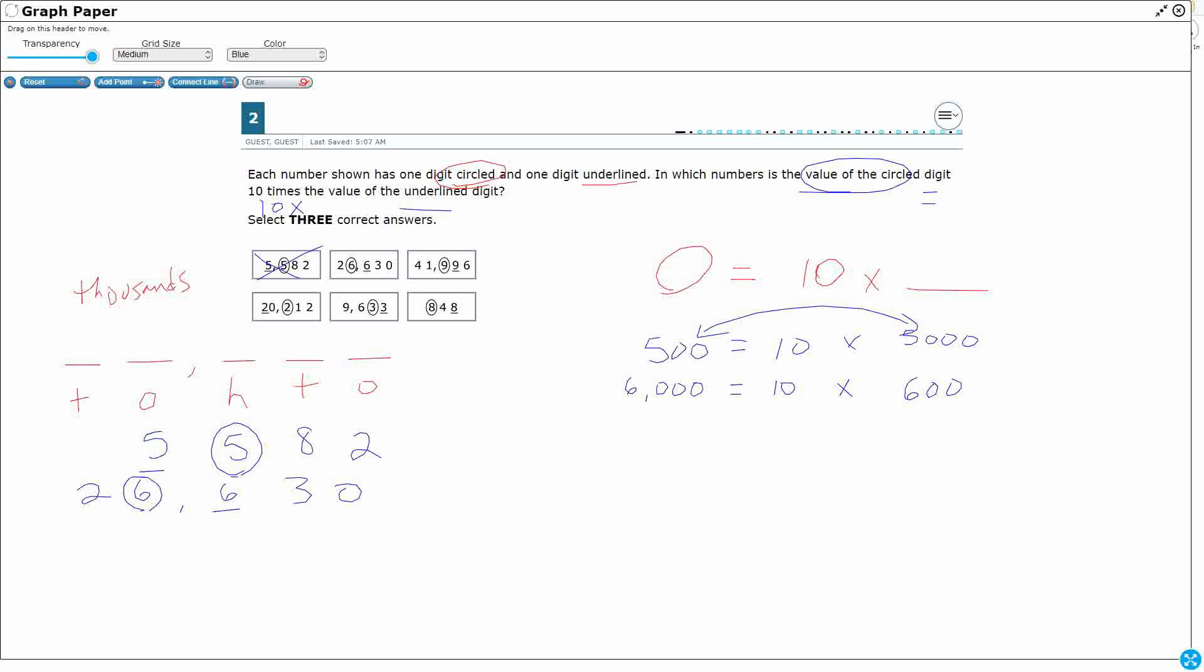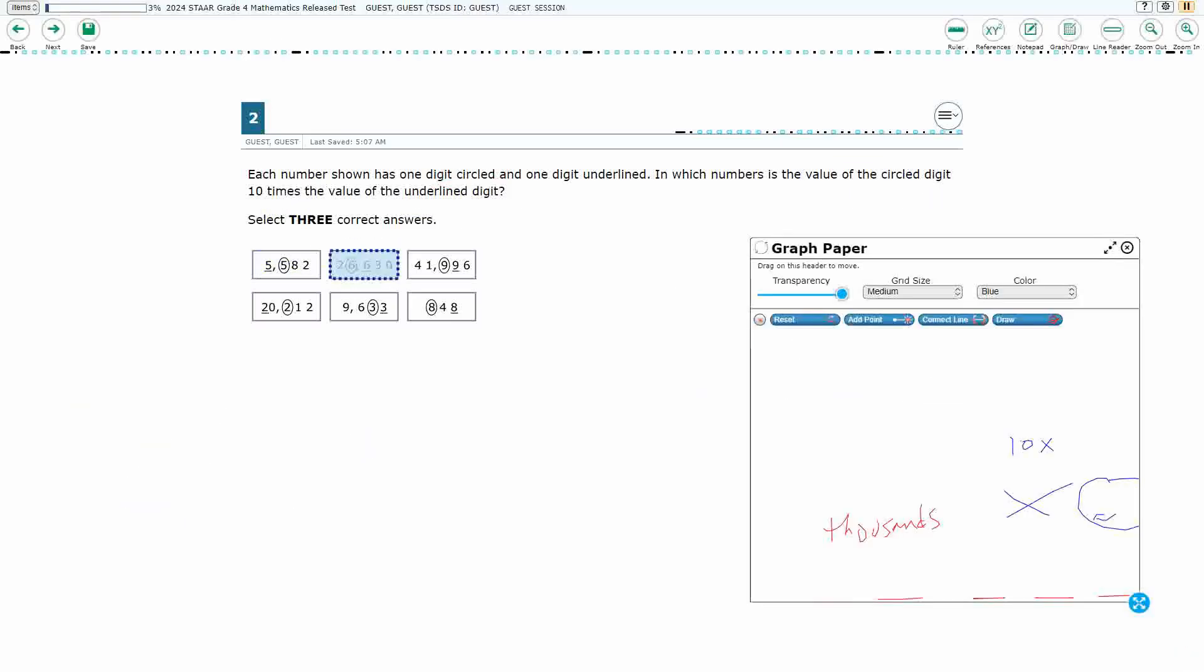Yeah, when you multiply by 10, you just add a 0 to the end. And every time you move over to the left one digit, you get 10 times bigger. Now, both digits have to be the same for it to be exactly 10 times. But each place value is worth 10 times more than the one to the right. So this one is good. So what we could do is we can go and select that one.